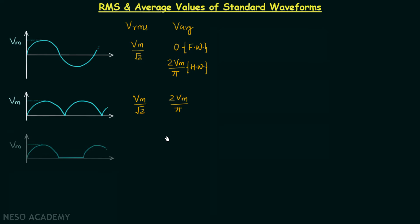Moving on to the third signal waveform: the half wave rectified sine wave. The RMS value in this case is equal to Vm over 2, and the average value is equal to Vm over pi.